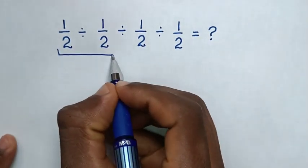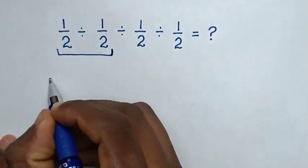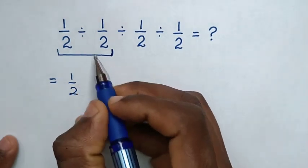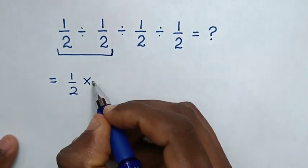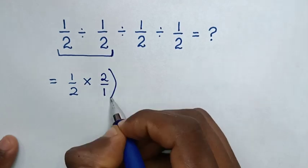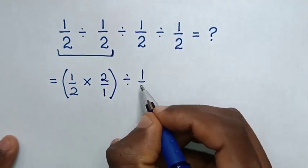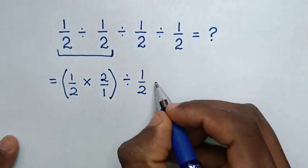We'll start to deal with this first operation. Then it will be equal to 1 over 2 divided by 1 over 2, which is the same as times 2 over 1, then bracket, divided by 1 over 2, then divided by 1 over 2.